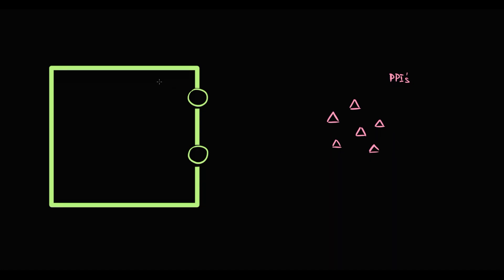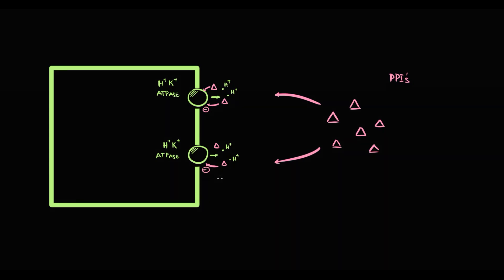To explain why, consider parietal cells: when we intake proton pump inhibitors, initially they are inactive. To be activated, they require hydrogen. In the fasting state, hydrogen-potassium ATPase produces a small amount of hydrogen molecules. In response, a small amount of proton pump inhibitors move toward those hydrogen molecules. In acidic pH, the proton pump inhibitors become activated and inhibit the function of hydrogen-potassium ATPase, thereby inhibiting production of hydrochloric acid. However, in this fasting scenario only a small amount of PPIs become activated, resulting in very weak inhibition.